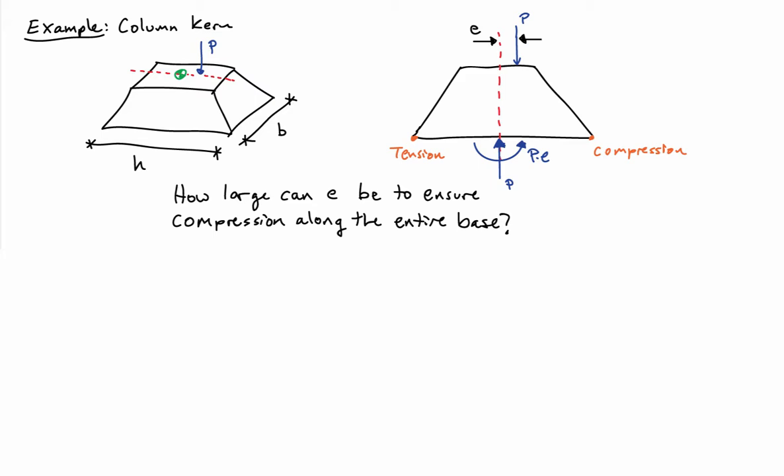The side view is shown over here where I have this trapezoid. I have the force P offset from the center location by some distance E. When I do this, on the bottom face of the column, I'm going to have for equilibrium a moment P times E and an axial force P.